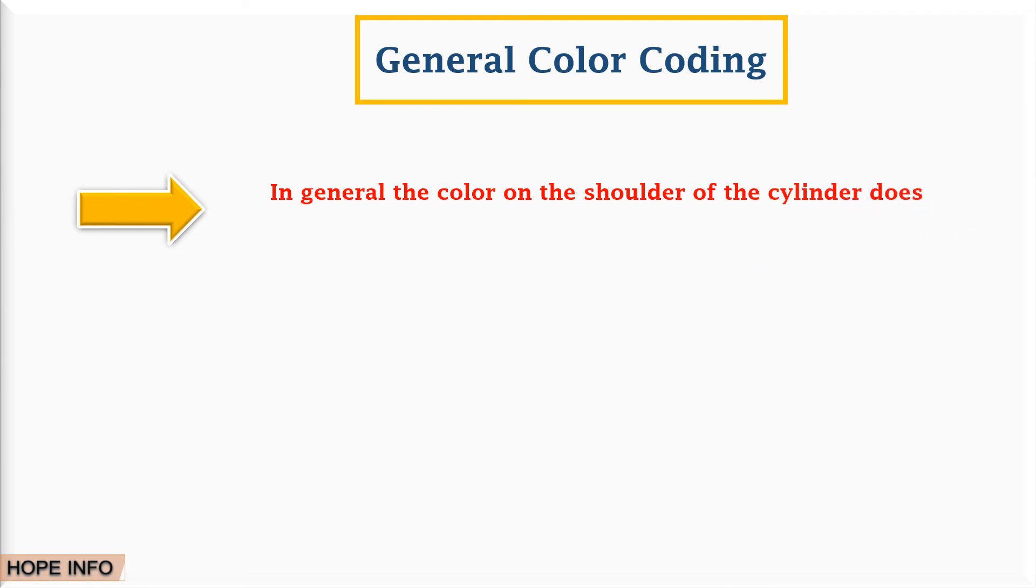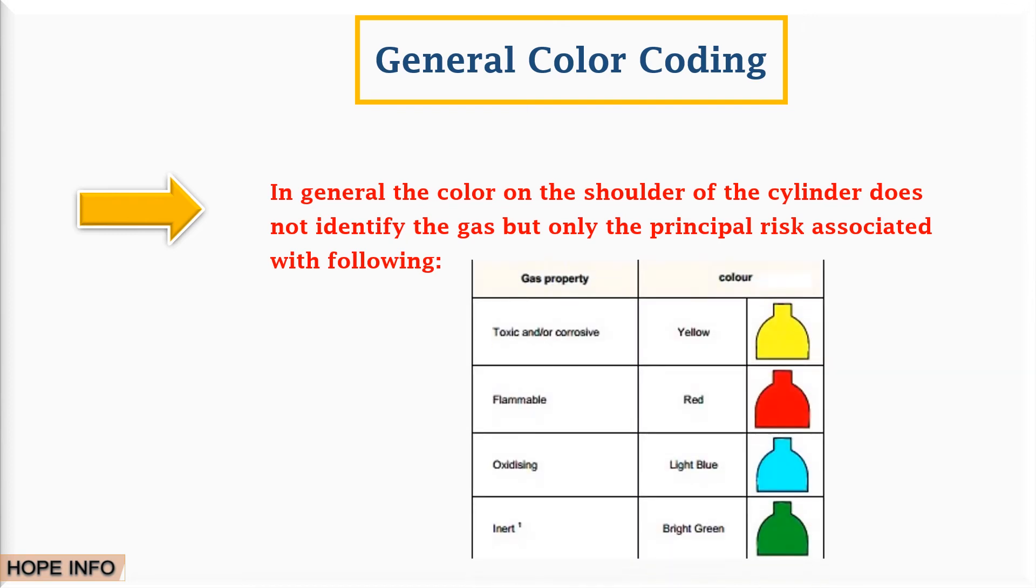Red color cylinders indicate inflammable gas. Oxidizing gas cylinders are light blue in color and inert gas cylinders are bright green. The fact that new standard coding colors are being used will be shown by a capital letter N.